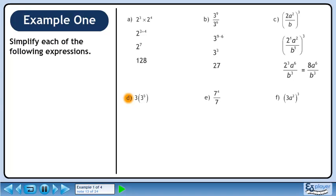Now we'll move on to part d. We can write 3 as 3 raised to the power of 1. We are multiplying 2 powers at the same base, so add the exponents. This gives us 3 raised to the power of 6.